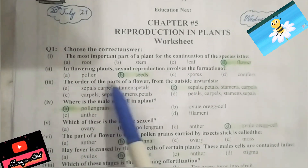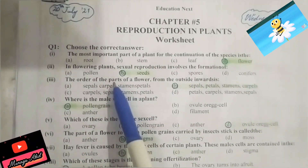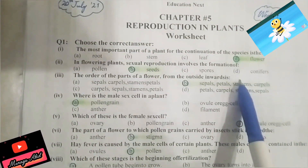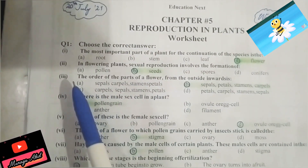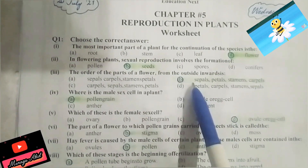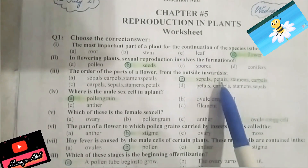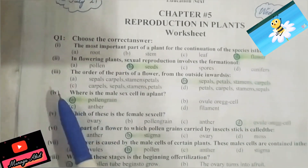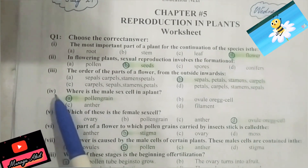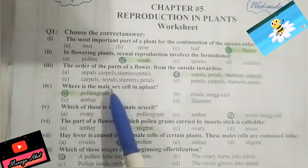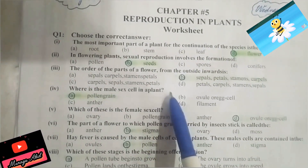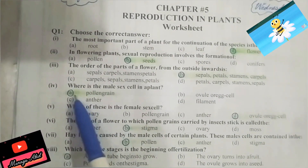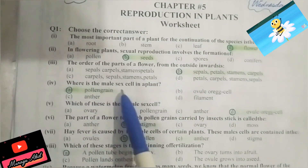Part 3: the correct order of the parts of a flower from outside inwards is sepals, then petals, then stamens, then carpels. Part 4: the male sex cell in a plant is found in the pollen grain. You should know that.